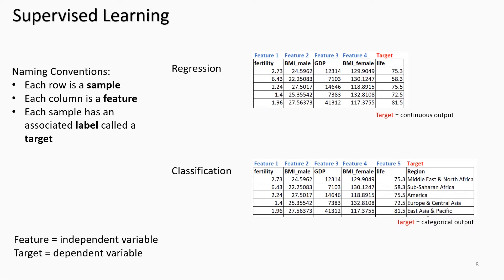To use a supervised learning algorithm, the data must be structured in rows and columns — each row is a sample or observation. The columns contain features (noted in blue) and the associated target (shown in red). A feature is also known as the independent variable and the target as the dependent variable. The target in regression is quantitative, while in classification it is categorical.